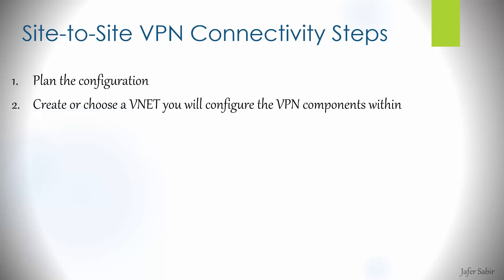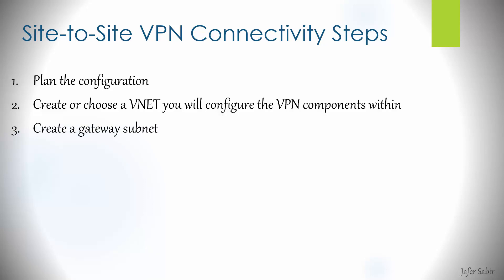For step 2, we would need to create or identify which virtual networks we need to configure the VPN within. Just bear in mind the IPs cannot conflict with the on-premises network, so keep the IP addresses unique on both sides of the tunnel. Next, we will create a gateway subnet which contains the IP addresses that the virtual network gateway VMs and services will use.